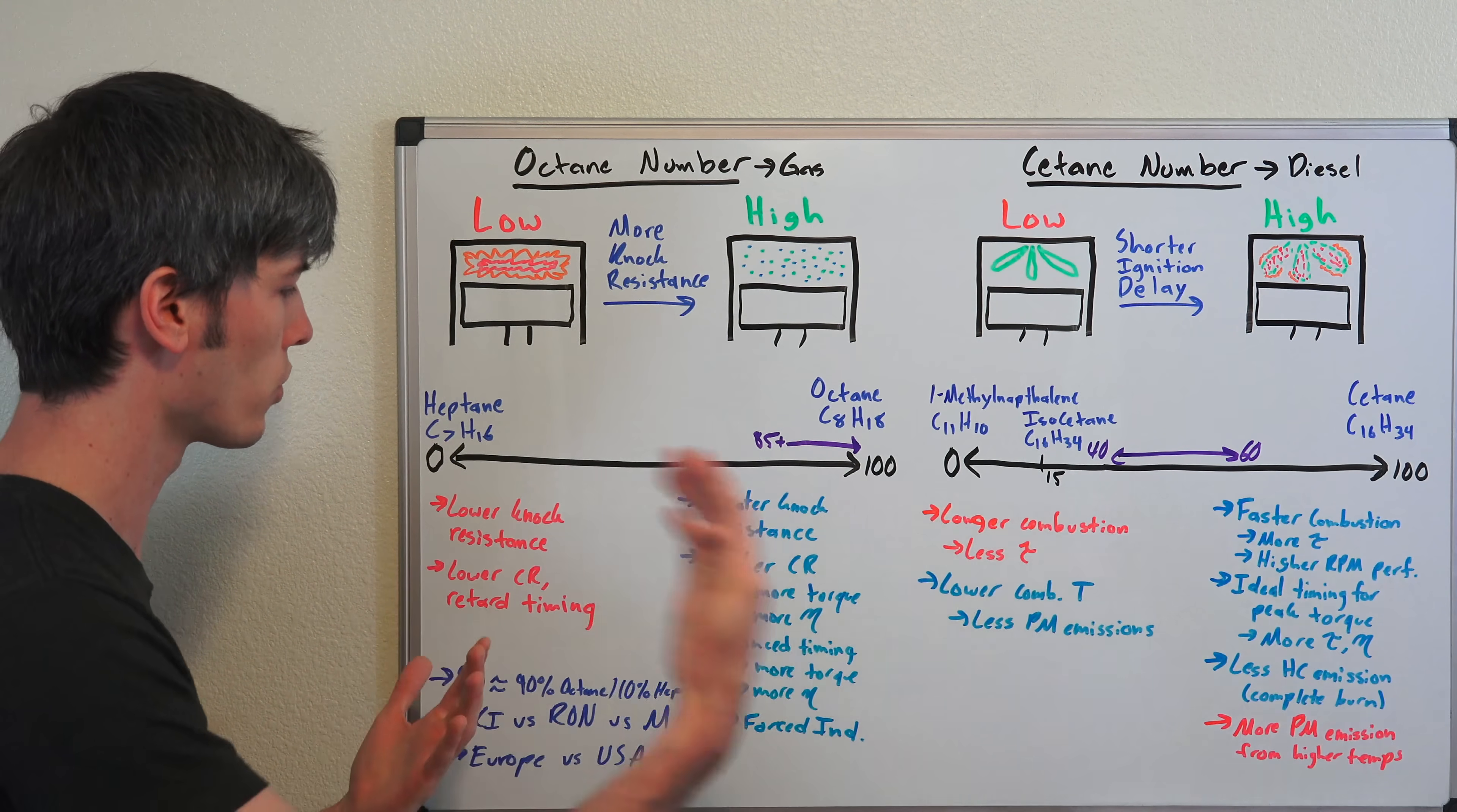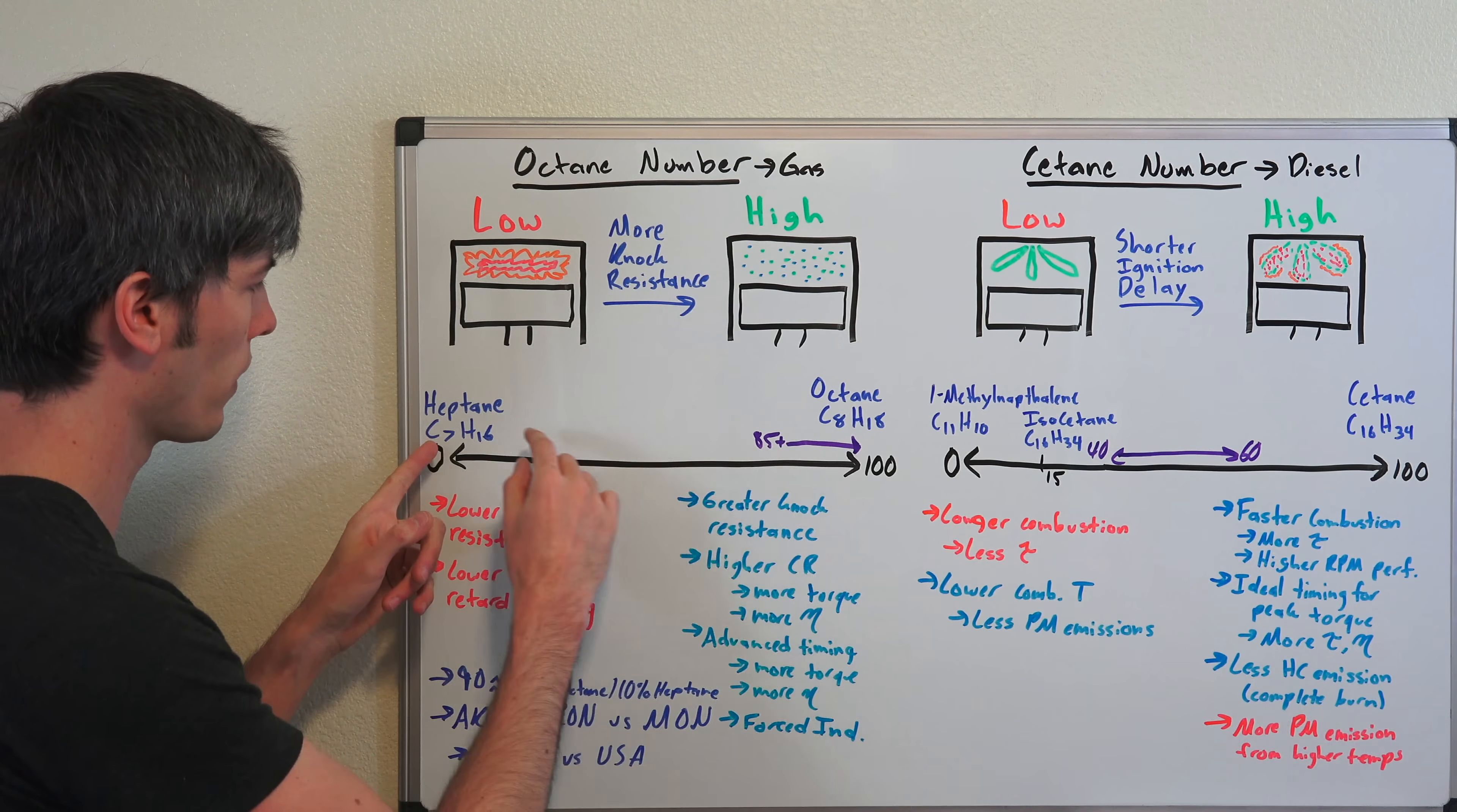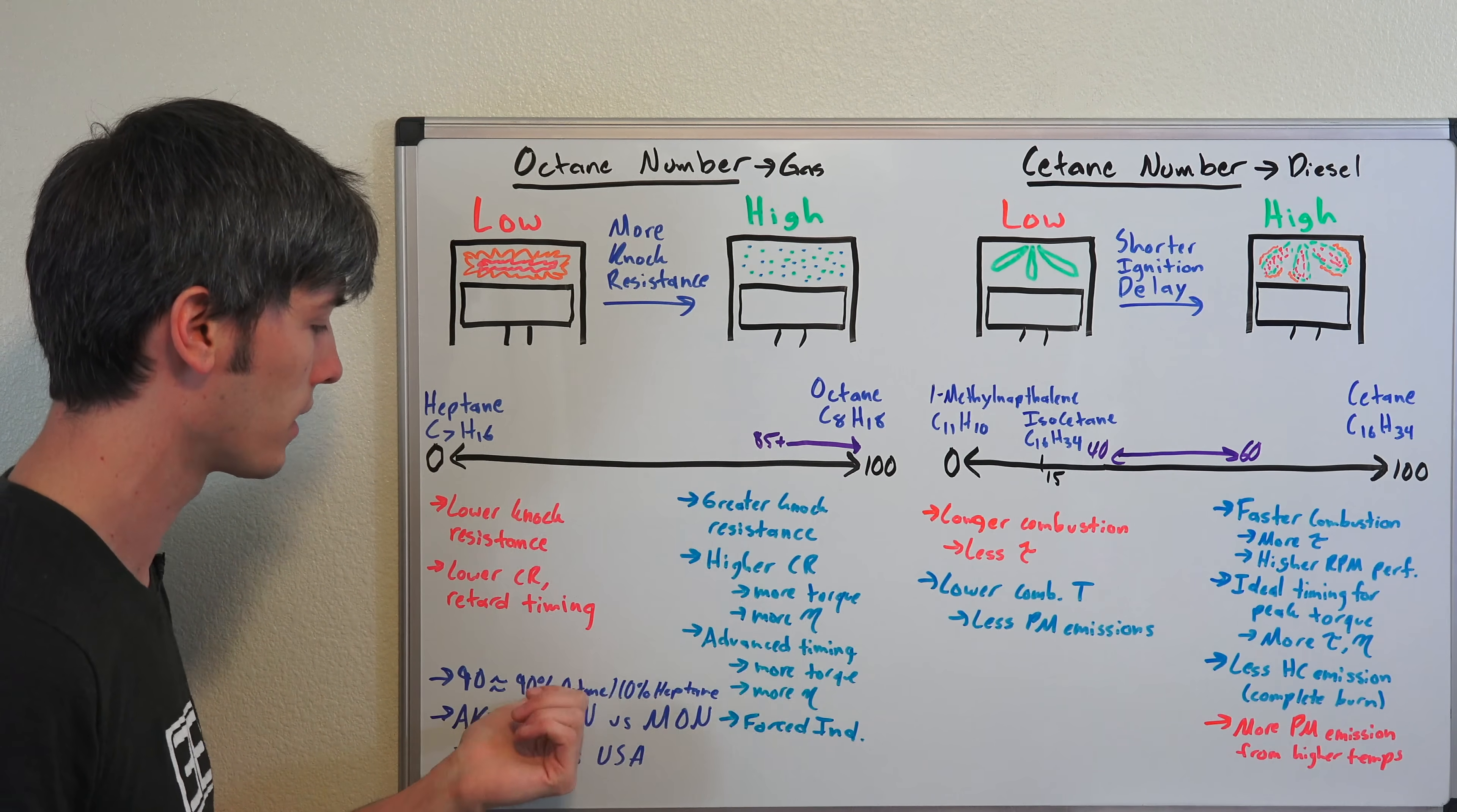So what is a fuel that has, for example, a 90 as its octane number? Well, a 90 would be equivalent to a fuel that was 90% octane and 10% heptane. That doesn't mean that's what the fuel is made of, but it would behave like a fuel that was that blend of octane and heptane.